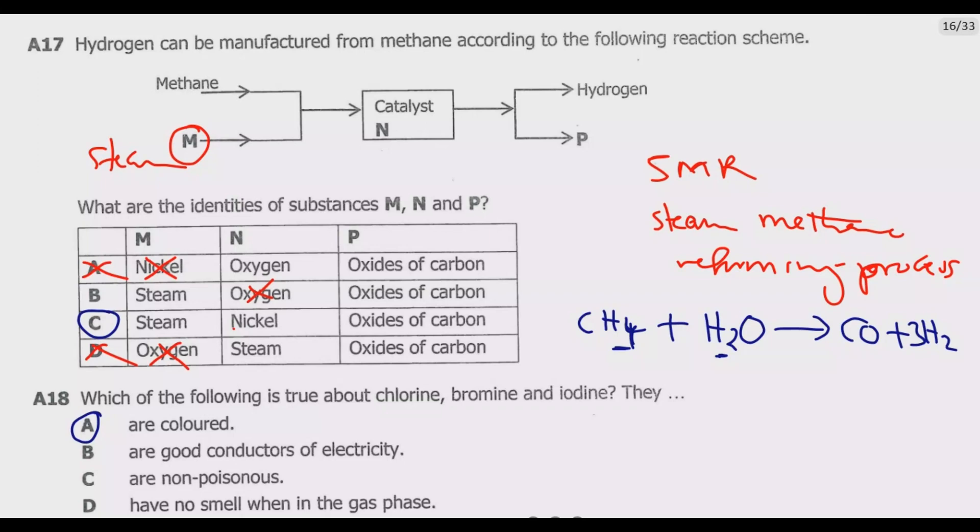Chlorine is pale green gas, bromine is a reddish-brown liquid and iodine is a dark gray or purple solid or purple vapor. Hence, A should be straightforwardly correct.